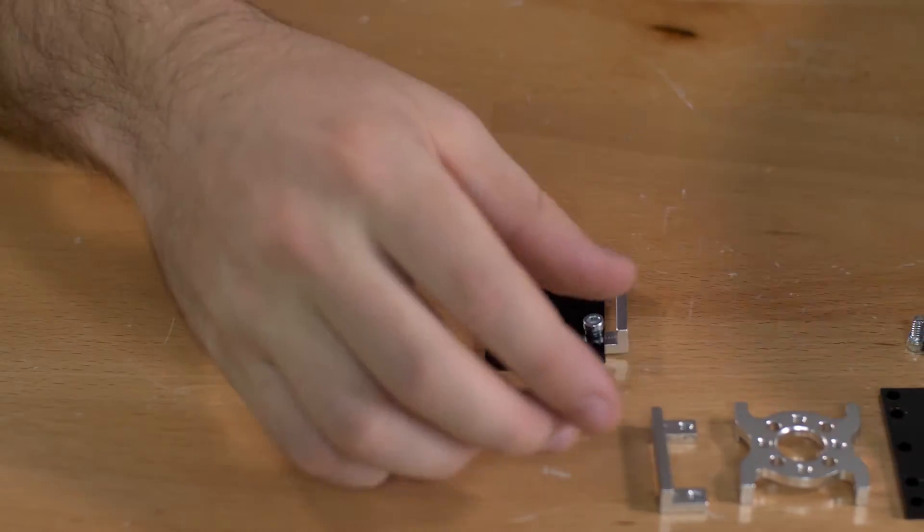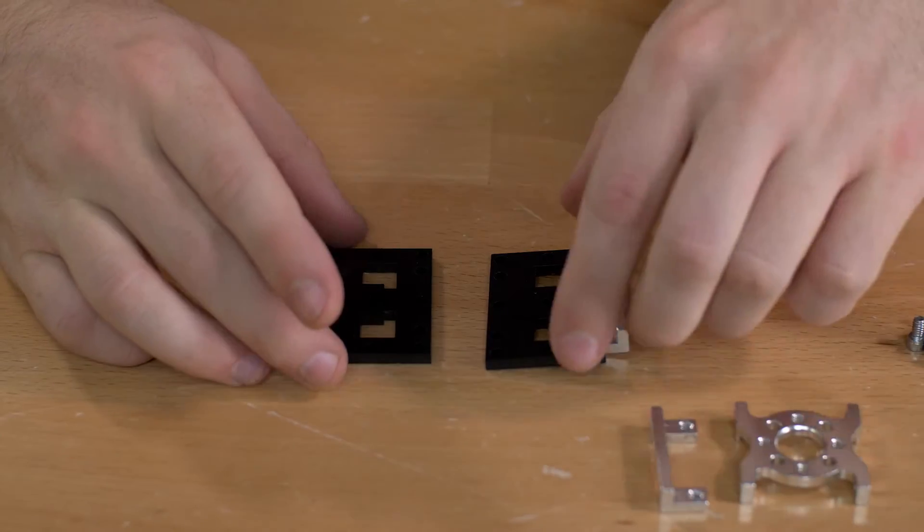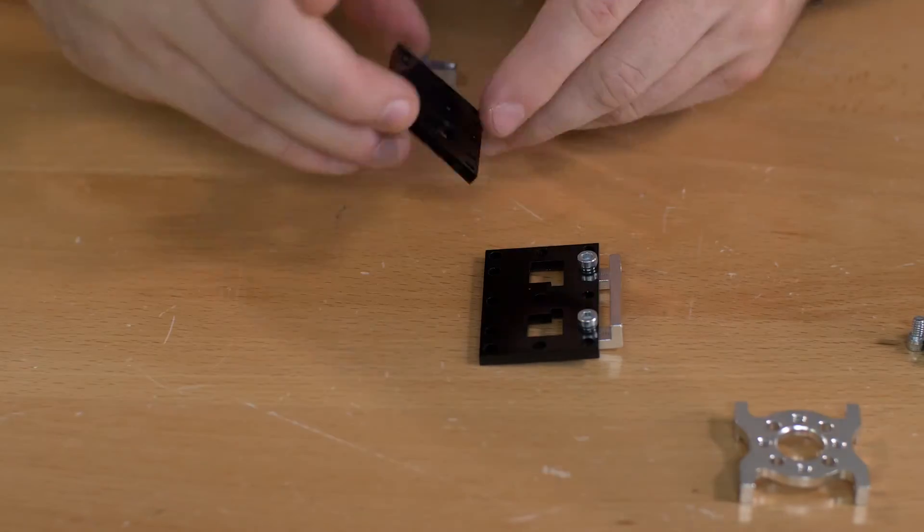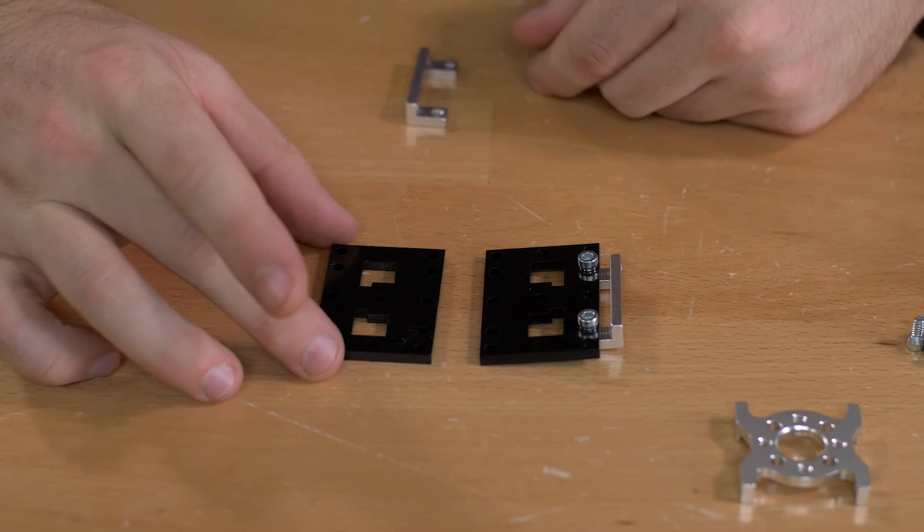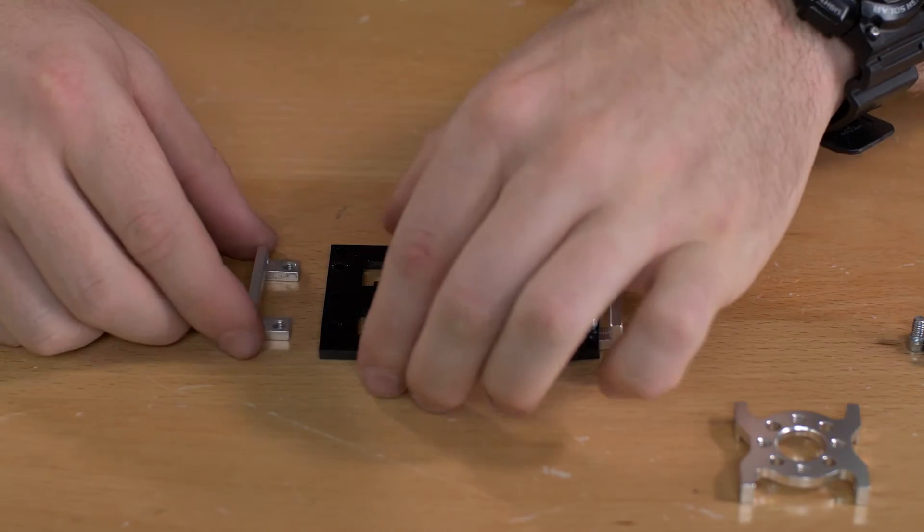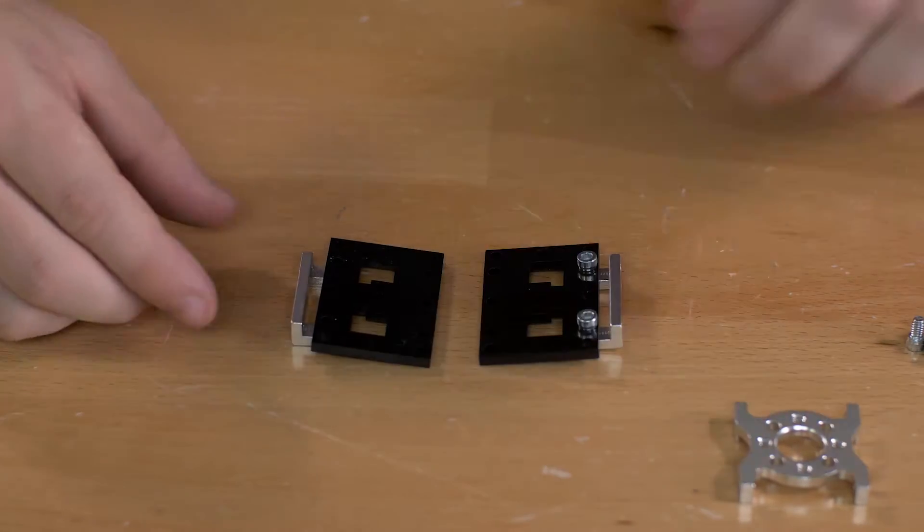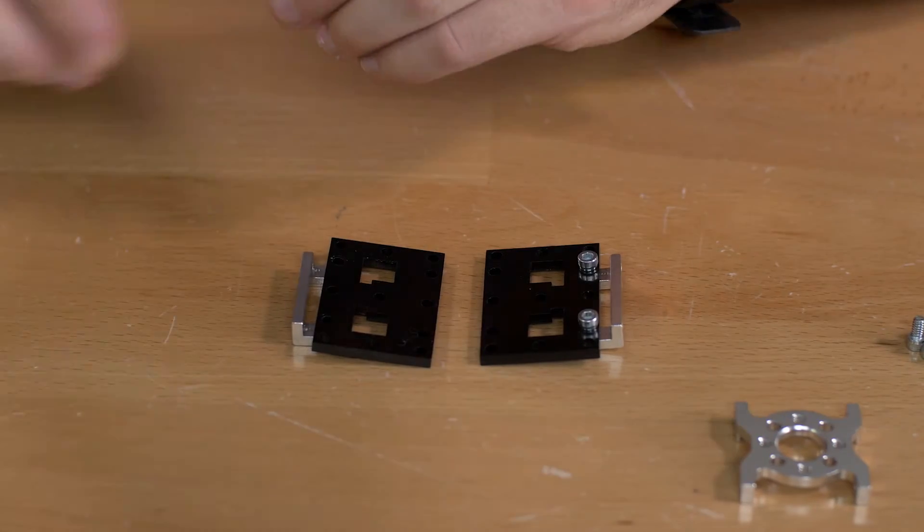On the other side you're actually going to do exactly the opposite because they're going to go together. Just line them up there and set it up something like that and put that together. Again that's quarter inch socket head screws.